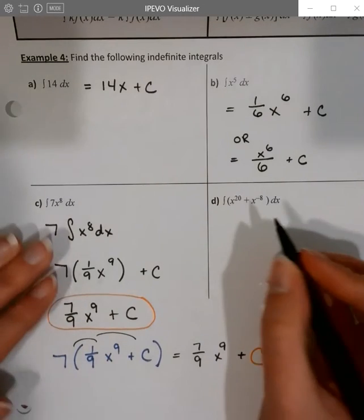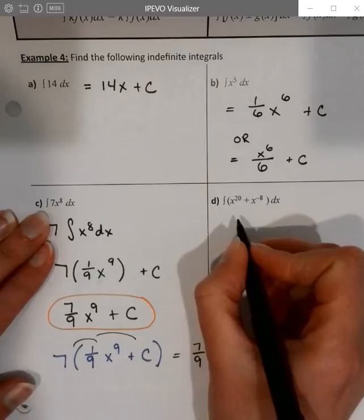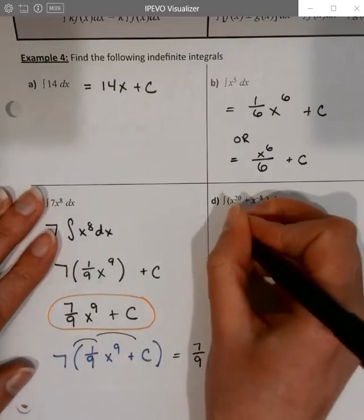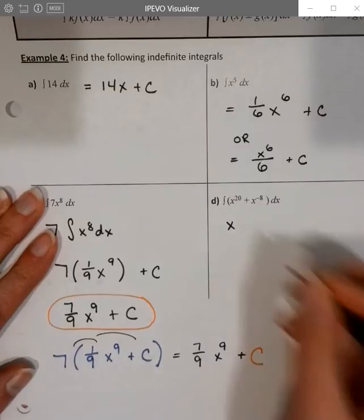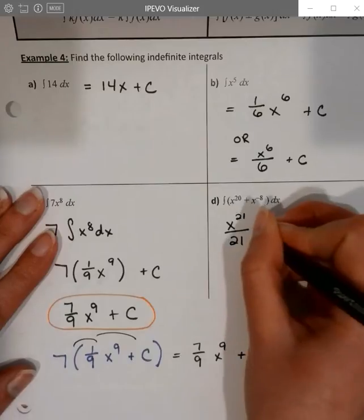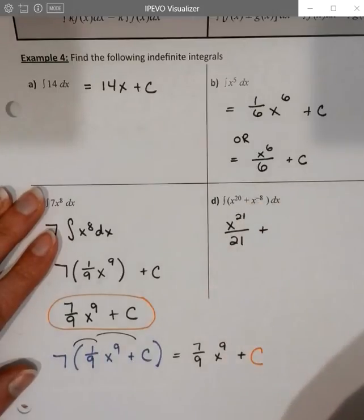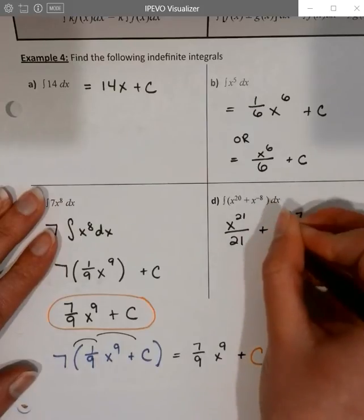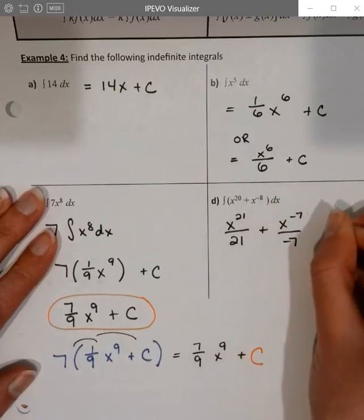Okay, now looking at the next one, we have a couple instances here of power rule and the sum difference rule. So we're going to start with the x to the 20th, add one. That's x to the 21st over 21, new power, plus. Okay, so we've got an x to the negative 8th plus 1 is going to be x to the negative 7 over, new power, negative 7, plus c.